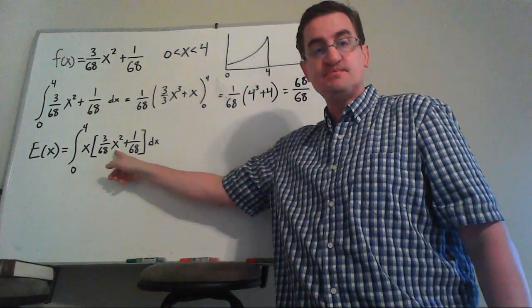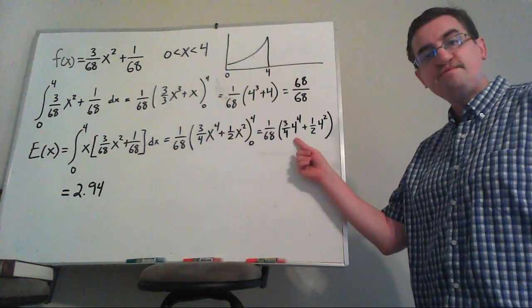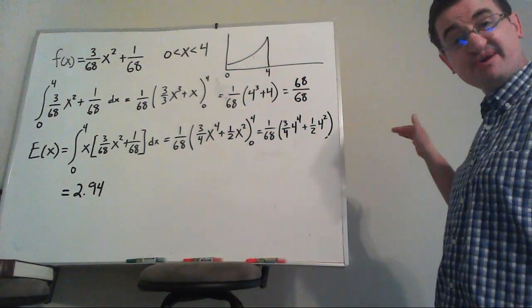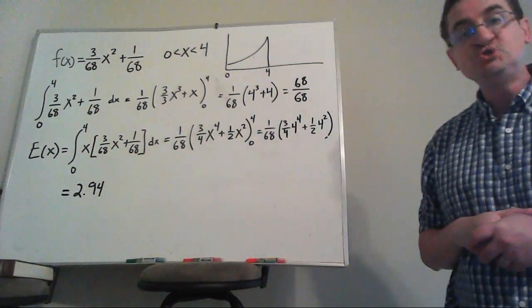I'm going to multiply this x through to get x squared. I'm going to pull the 68 out. So I plug in 4 and get this. When I plug in 0, it just comes to 0, which is good because I ran out of room on my board here. And we get an expected value of 2.94.